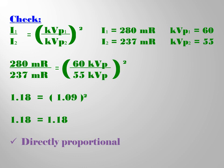Higher than the computed final intensity, which is 237 mR, because we decreased 60 KVP to 55 KVP.